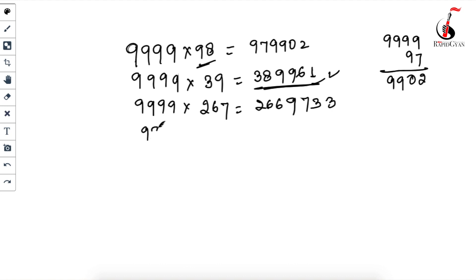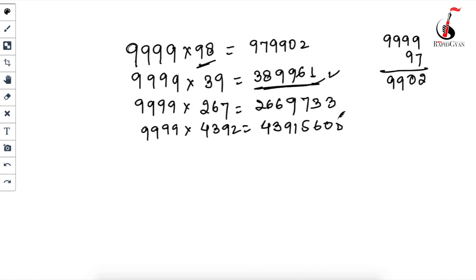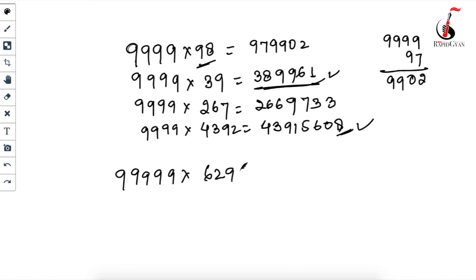For 9999 × 4392: one less is 4391. Then 9 − 4 = 5, 9 − 3 = 6, 9 − 9 = 0, 9 − 1 = 8. Answer: 43915608. For 99999 × 6290: one less is 6289. Then 9 − 6 = 3, 9 − 2 = 7, 9 − 8 = 1, 9 − 9 = 0. Answer: 628993710. Check it!